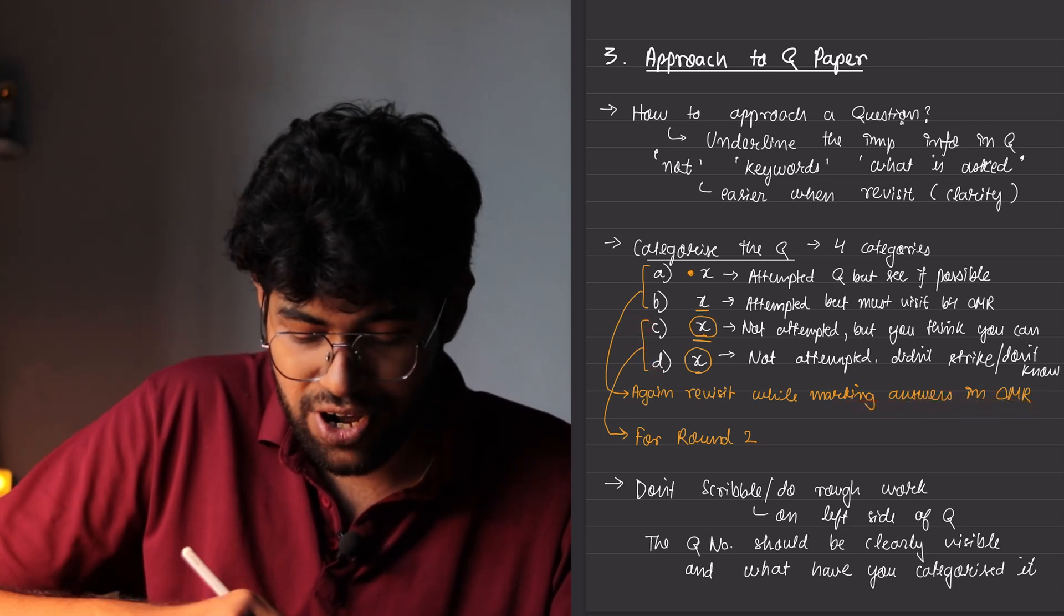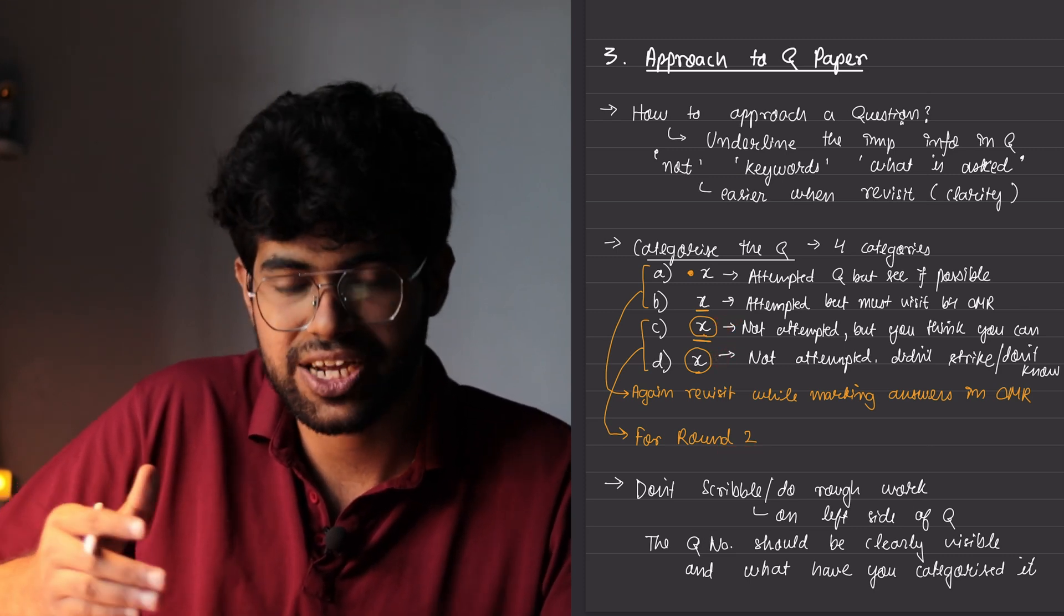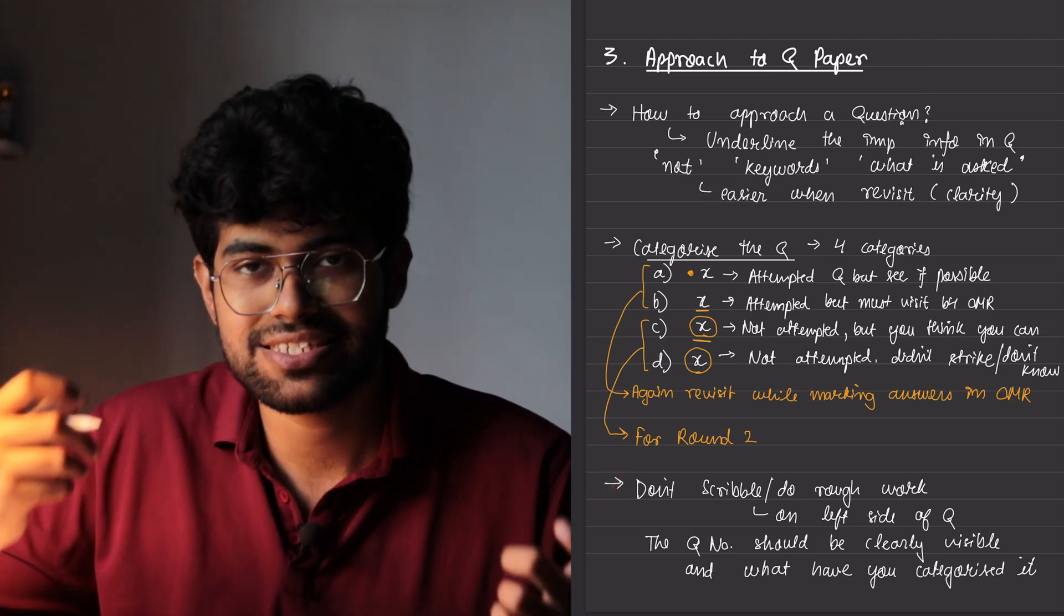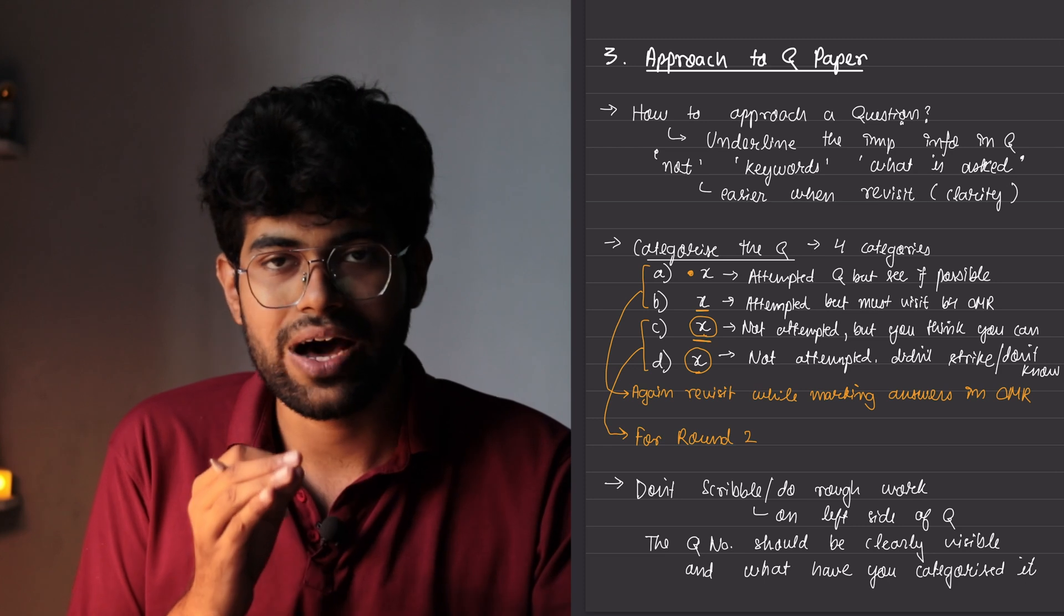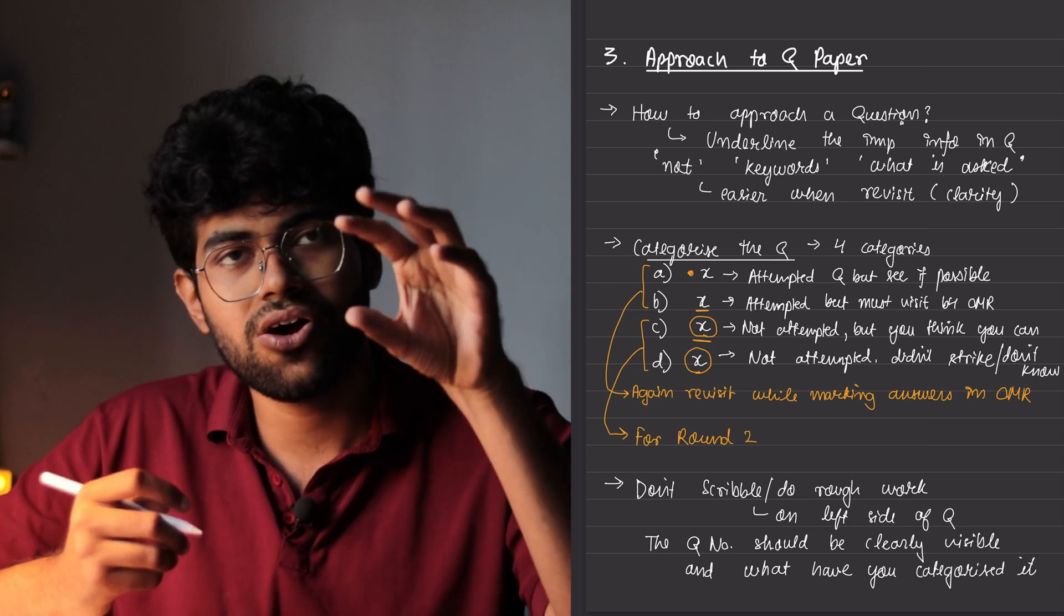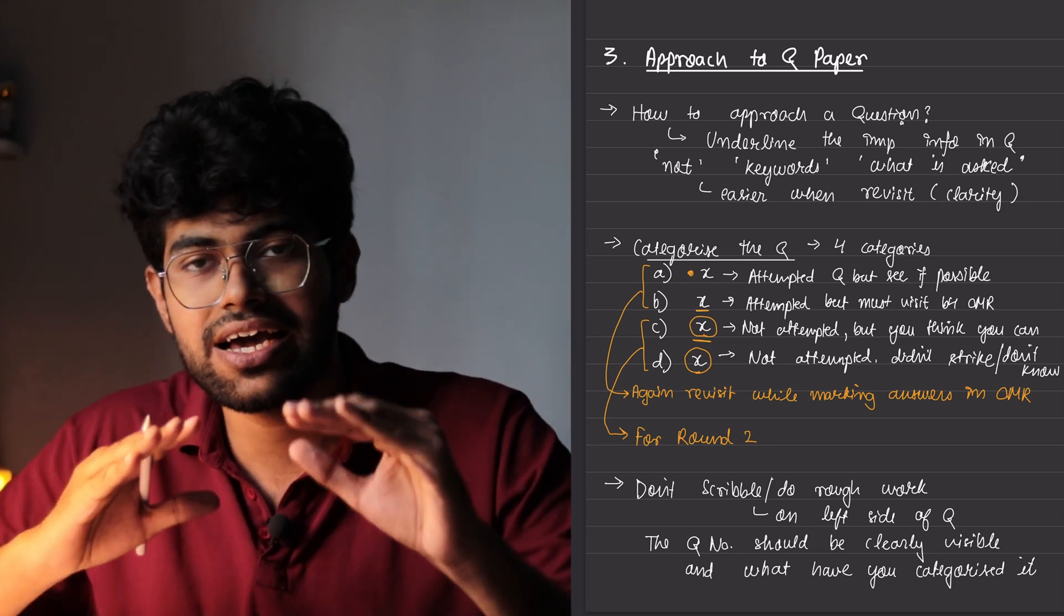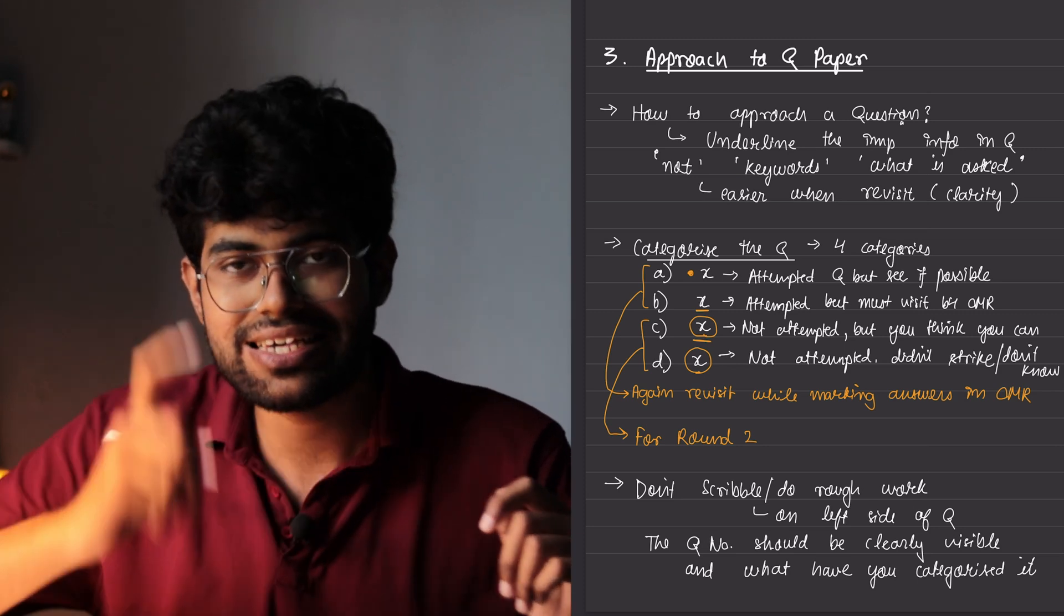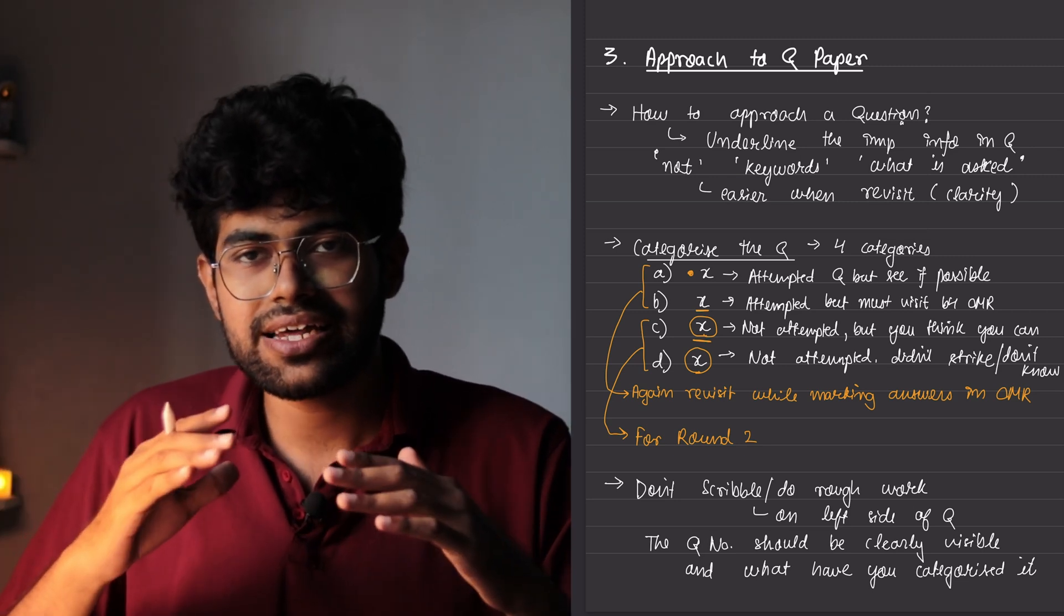And the C and D category is for round two with first priority to the C category and then to the D category if your time is constrained. And after this one point to remember that I have personally experienced in my practice test is do not scribble or do not do rough work on the left side of the questions. Why? Because if you scribble on the left side, when you are going to mark the answers in the OMR sheet, then the question number will not clearly be visible. And the four categories that you have categorized the question into also will not be visible clearly, right? So keep the left side of the question where the question number is written empty so that you can easily revisit them because going through all those pages back and forth is a tiring task in the exam. So make it as easy as possible.